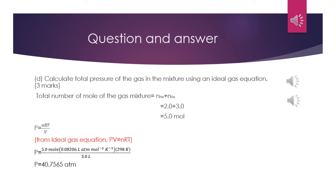Moving on to question D: calculate the total pressure of the gas mixture using the ideal gas equation. To answer this, we use the ideal gas equation PV = nRT. Since the question asks for total pressure, we rearrange to P = nRT / V.